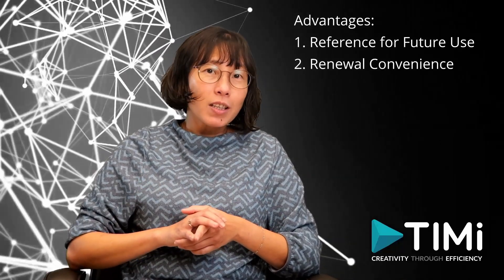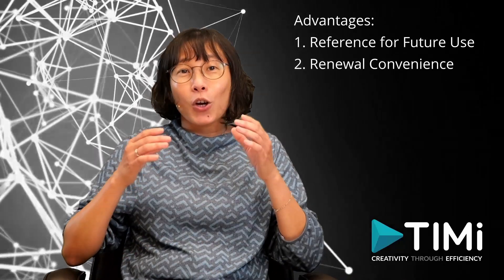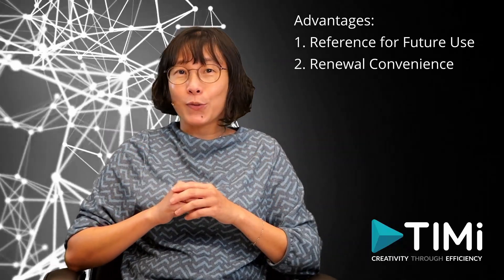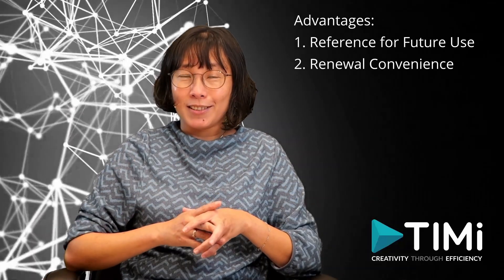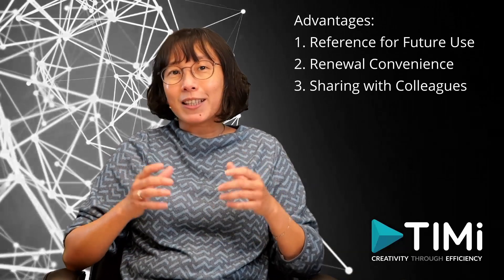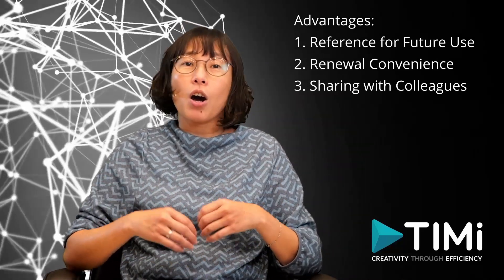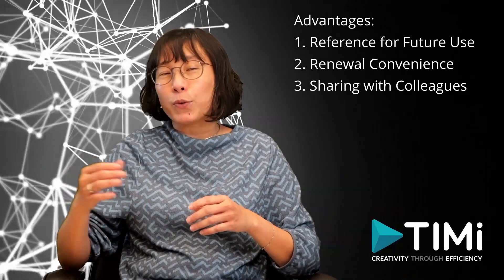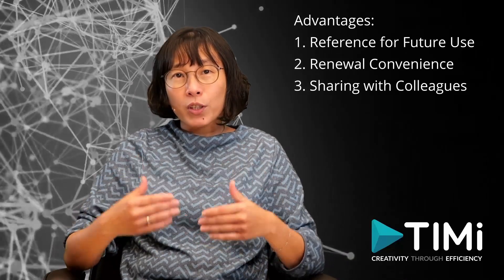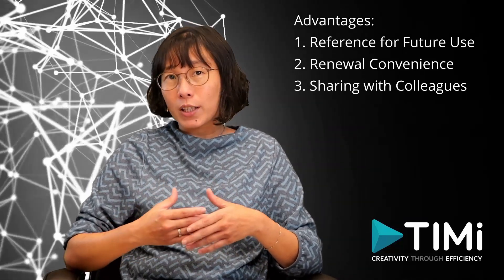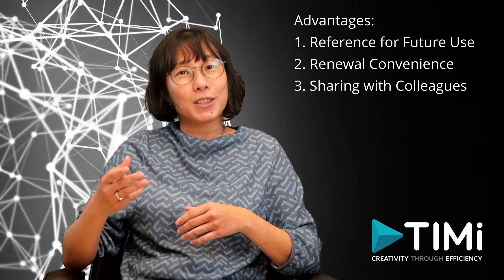Second, renewal convenience: if the key expires, you can conveniently reuse your small Anatella graph to renew your access and get a new unlock key. Third, sharing with colleagues: you can share this box with your colleagues after ensuring your unlock key is removed, of course. This allows your colleagues to effortlessly obtain their personal Anatella unlock key by running the process anew within the same three parameters that you have.